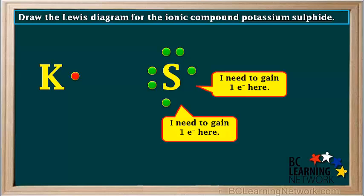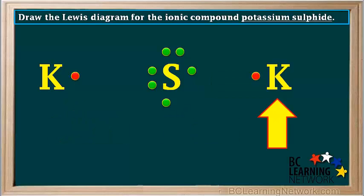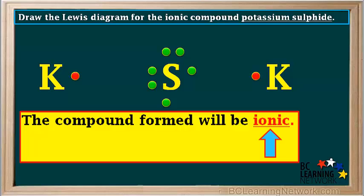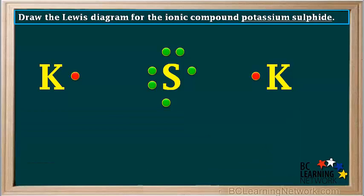Notice that sulfur needs to gain two electrons in order to form a stable octet. But a potassium atom only has one valence electron it can lose to form a stable ion. So we add another potassium atom on the right like this. This time we'll show its valence electron on the left of the symbol. Remember it doesn't matter where we show the valence electron around the atom. Potassium is a metal and sulfur is a non-metal, so the compound formed from potassium and sulfur will definitely be ionic. So electrons will be transferred and not shared between atoms.